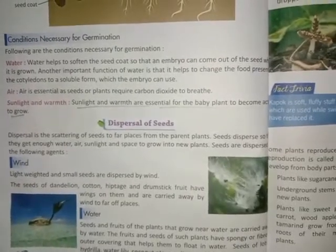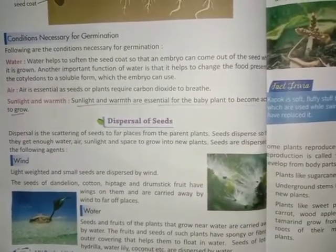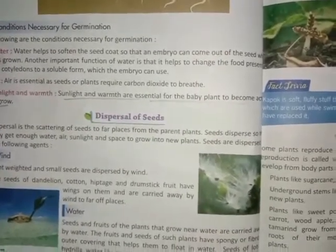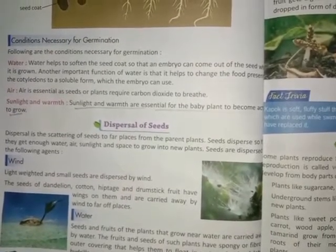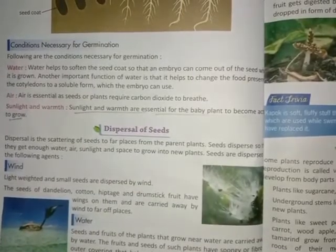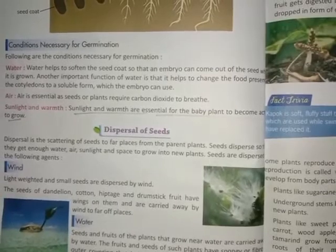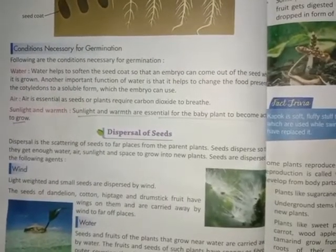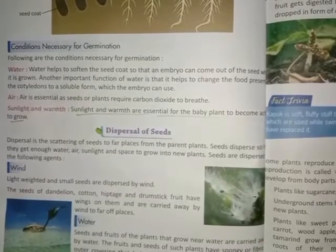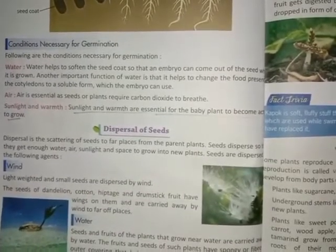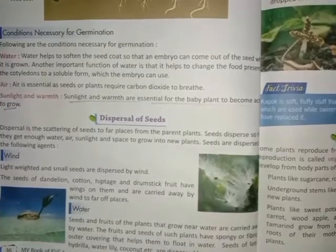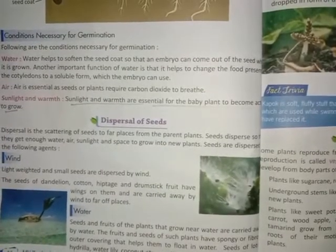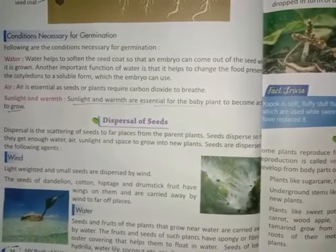Dispersal of seeds. There are five main modes of seed dispersal: gravity, wind, by sticking, water, and by animals. Dispersal involves the letting go or detachment of a seed from the main parent plant. Dispersal or spreading is the scattering of seeds to far places from the parent plants. Seeds spread so that they get enough water, air, sunlight and space to grow into a new plant. Seeds are spread by the following agents.